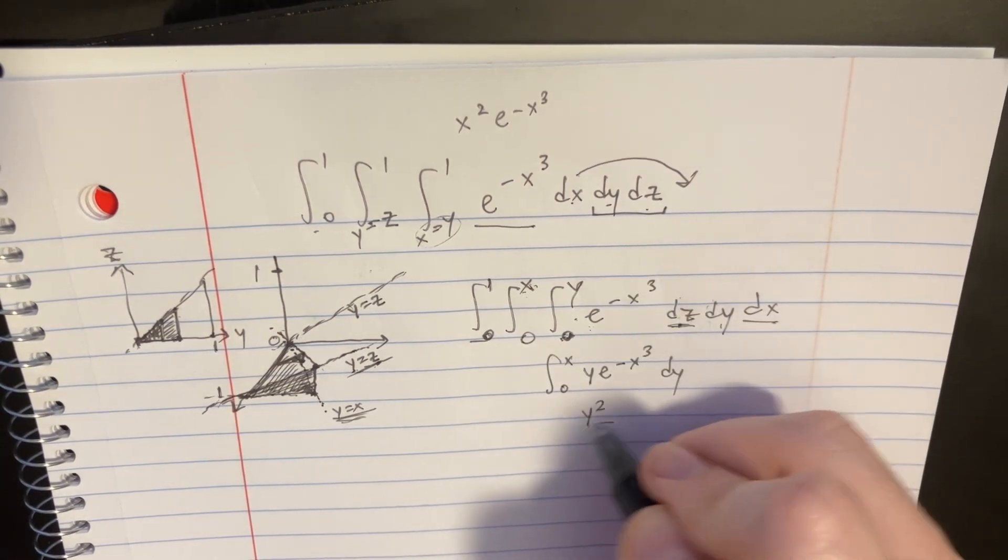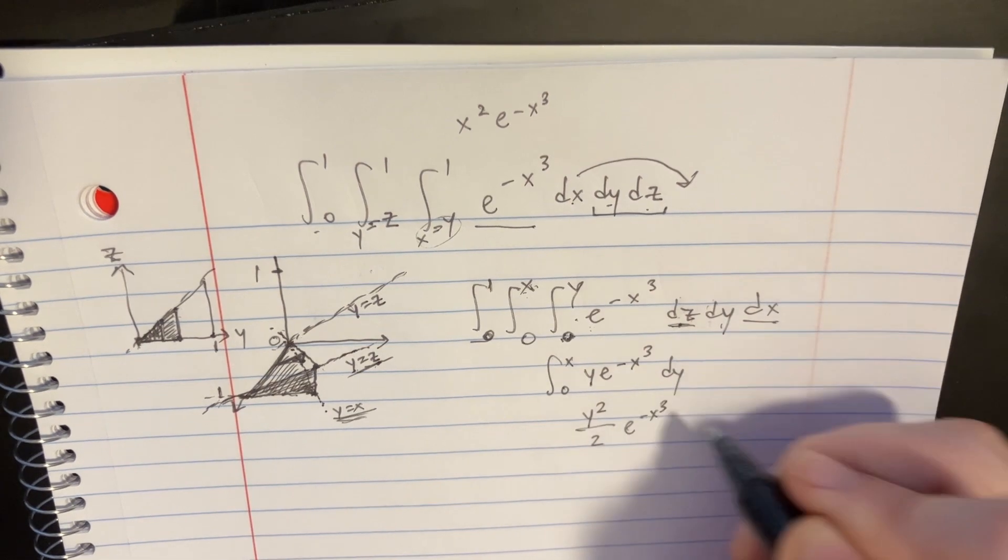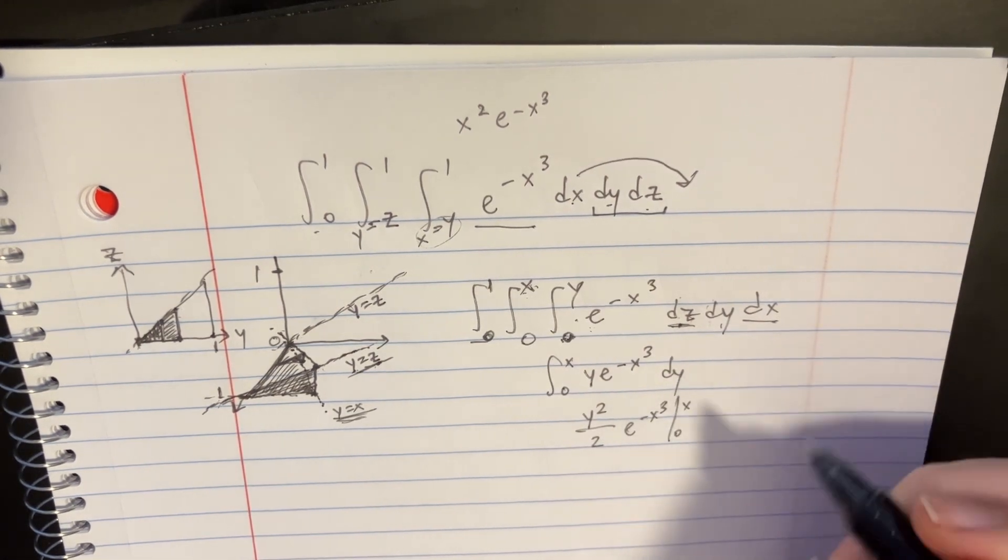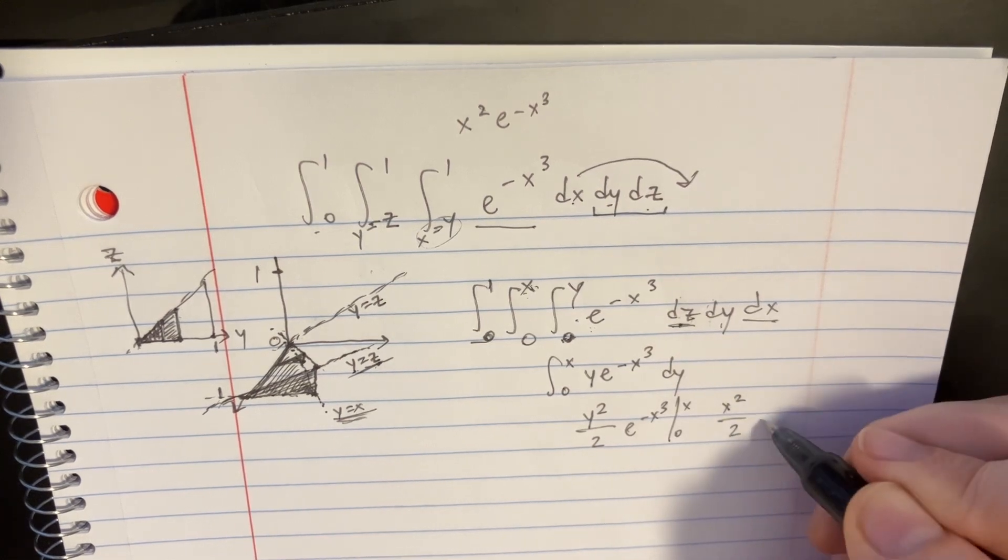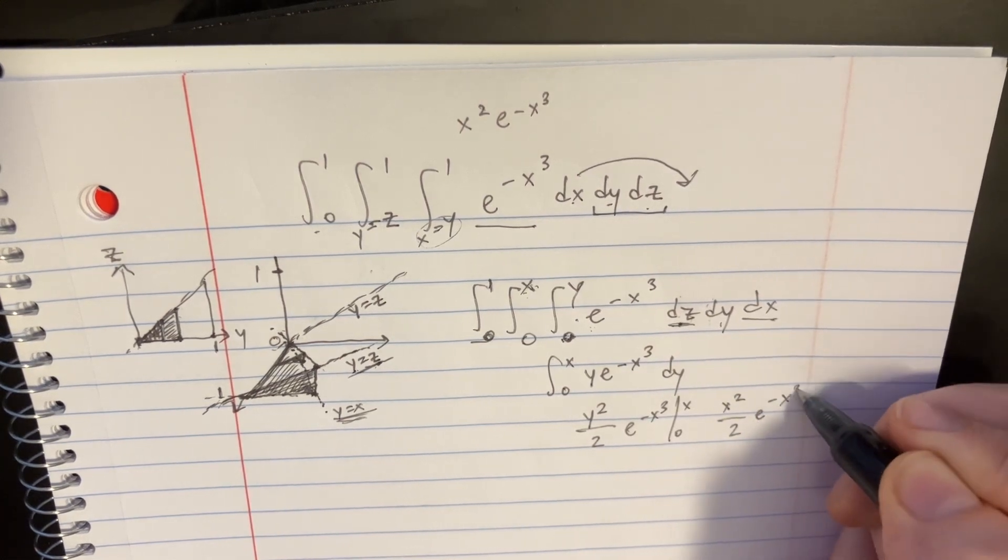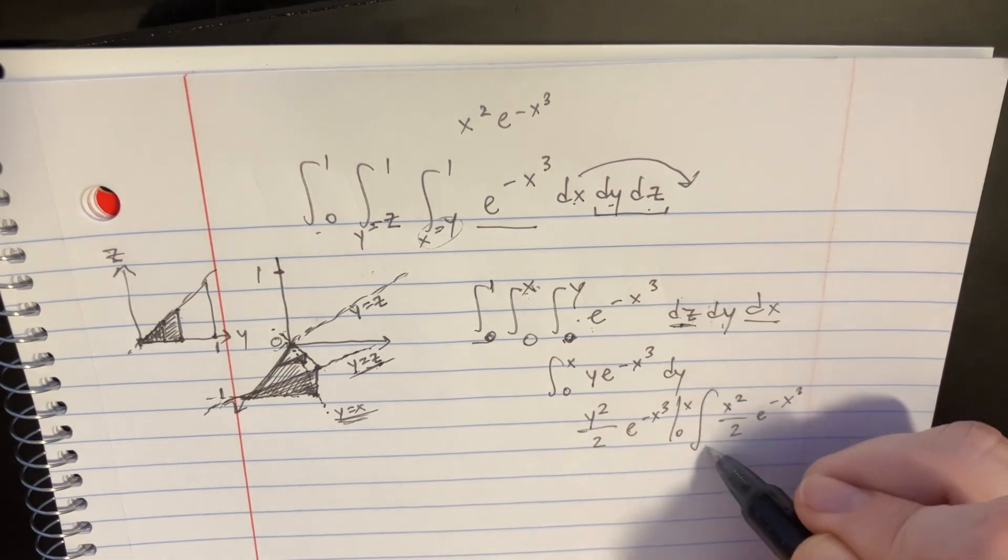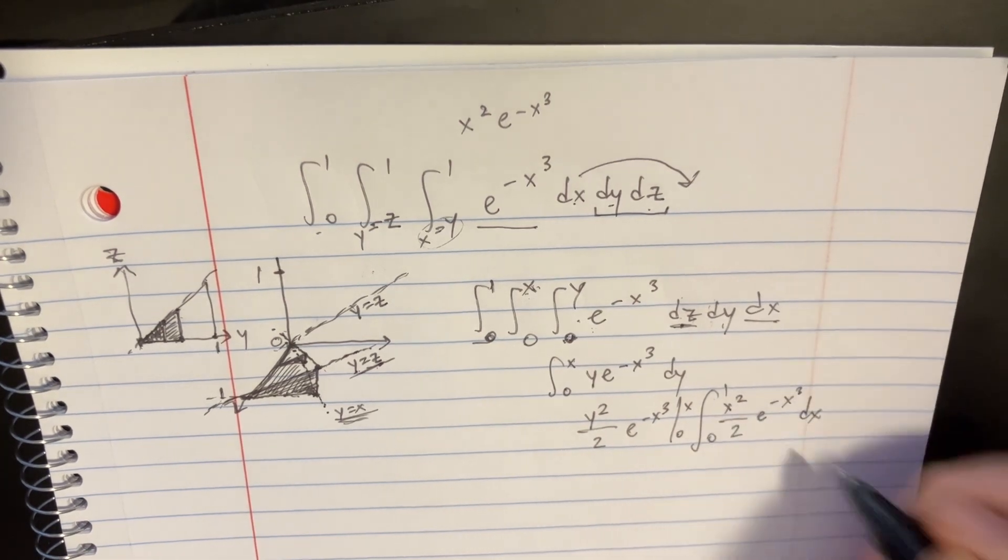And then we integrate over the dy. So we go 0 to x over dy. And in order to do that, we're going to y squared over 2, e to the negative x to the third. This is going from 0 to x. So this will basically just transform into the x squared over 2, e to the negative x to the third. This is what we now take from 0 to 1 in the dx.